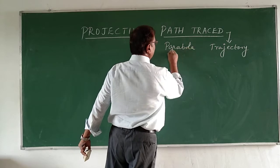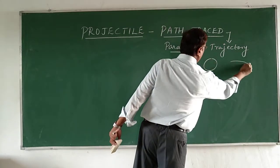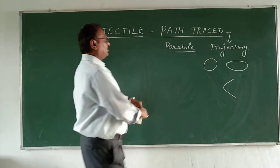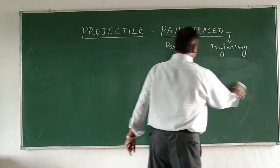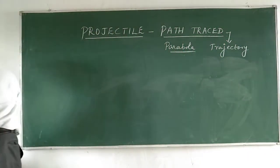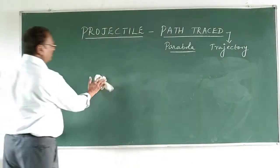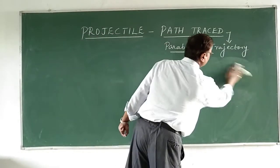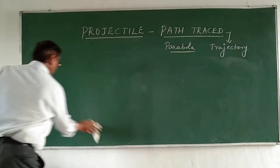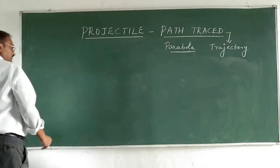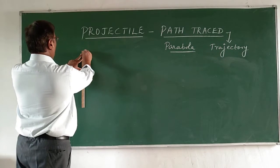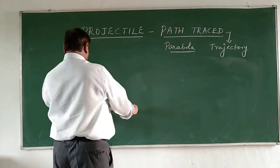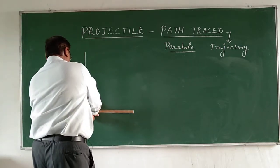A parabola — we know circle and ellipse, and now we are going to study a shape called parabola. You will learn more about it in mathematics as well. Let me draw the diagram with two axes: horizontal and vertical.